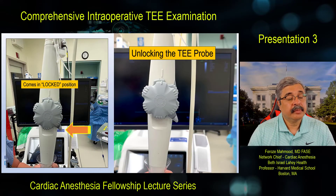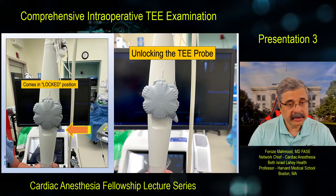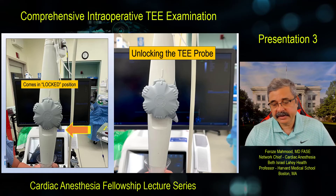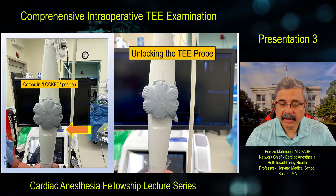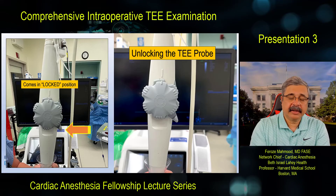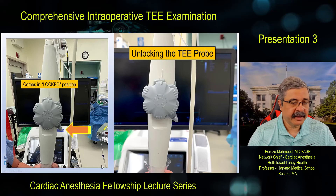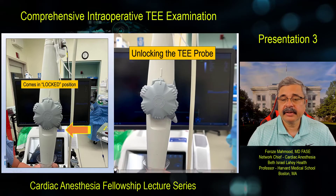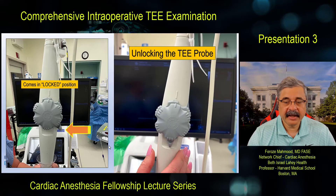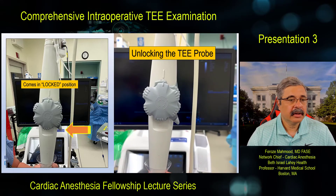Prior to insertion of the transesophageal echocardiography probe, ensure that the TEE probe is unlocked. Inserting the probe in the locked position can cause esophageal damage because it becomes very stiff. In the unlocked position, it can bend and flex — but if unlocked and not monitored, it can also inadvertently flex excessively causing damage. Once the TEE probe is handed over, before unsheathing, this button is specifically checked for being unlocked and brought in line with the center button to completely unlock the TEE probe prior to insertion. This is a safety protocol we practice.